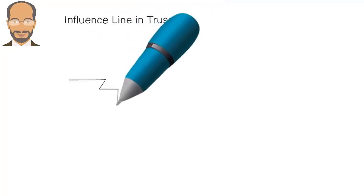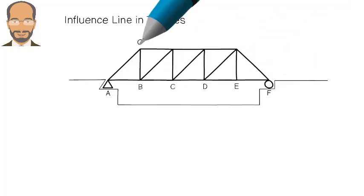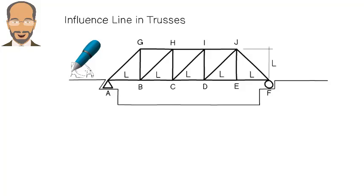Consider a truss bridge. The structure is subjected to a moving load. If the system is to be designed properly, we need to determine the effect of the moving load on each truss member.